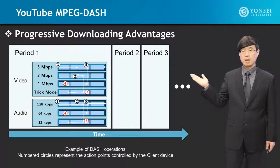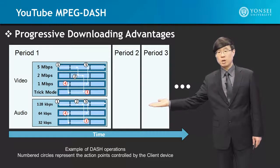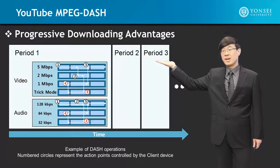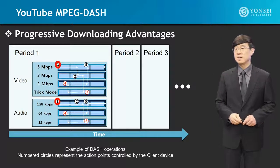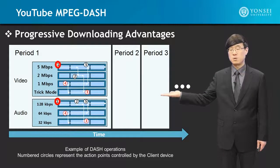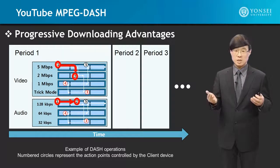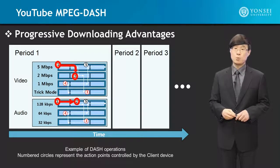Here is one example of a YouTube-based MPEG-DASH video service. Please note that there are periods in which changes are made, and that in the video and audio, there are multiple quality levels. The ones with higher data rates correspond to higher resolutions for both video and audio. Starting at point one, this is the reference point for video and audio. As you progress, due to changing network conditions getting worse, the throughput is being reduced.